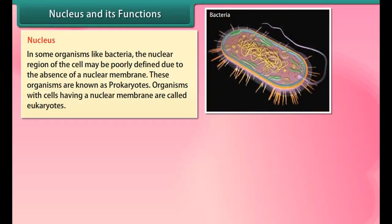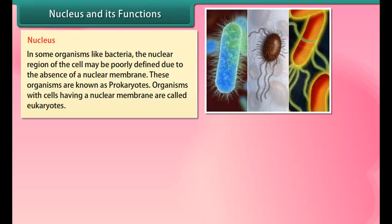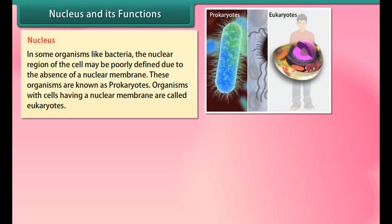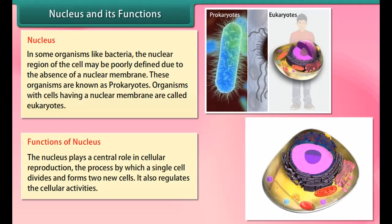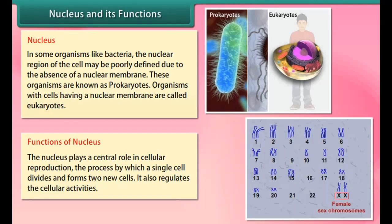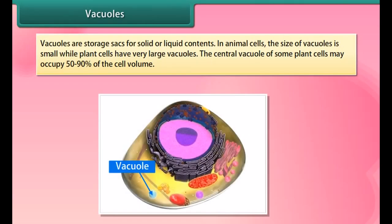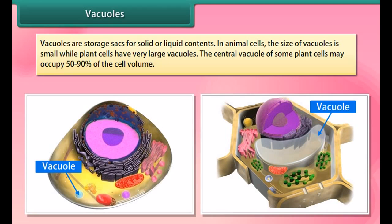The nucleus has a double-layered covering called the nuclear membrane. The nuclear membrane has pores which allow the transfer of material from inside the nucleus to the cytoplasm. The nucleus contains chromosomes, which are visible as rod-shaped structures only at the time of cell division. Chromosomes contain information for inheritance of features from parents to the next generation in the form of DNA (deoxyribonucleic acid) molecules. Chromosomes are composed of DNA and protein; functional segments of DNA are called genes.